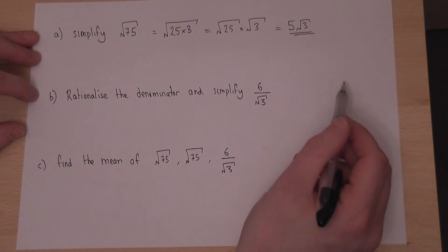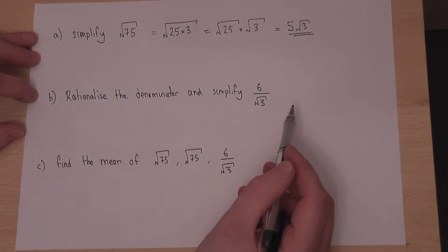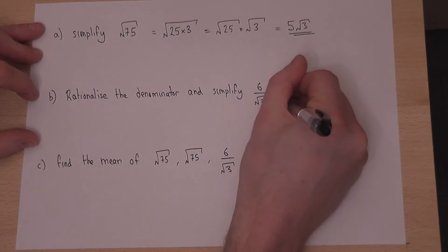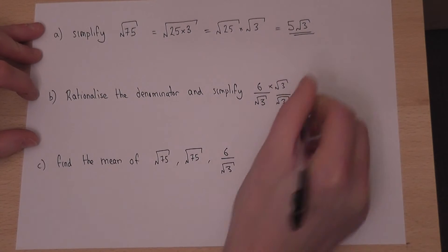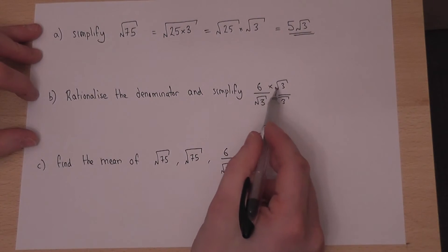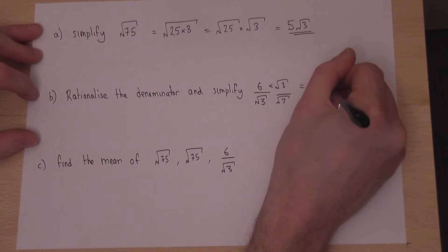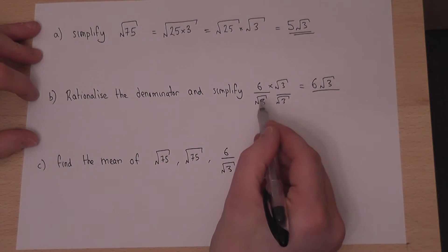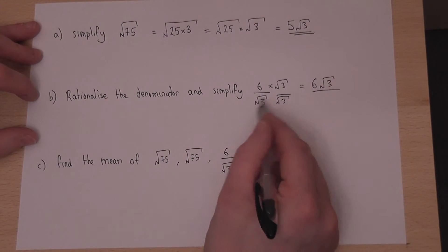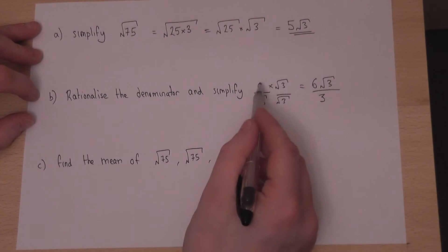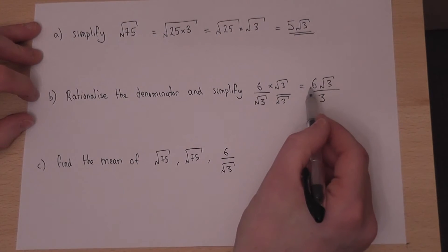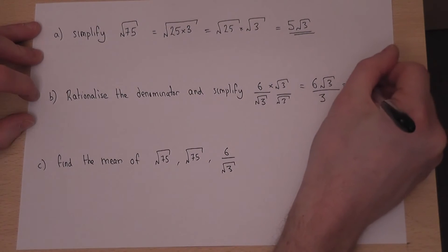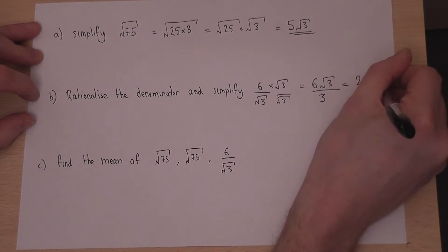The second part asks to rationalize the denominator. We multiply the top and bottom by root 3. The top becomes 6 root 3, and the bottom becomes root 3 times root 3, which is root 9, which is 3. So 6 over root 3 equals 6 root 3 over 3. There are two 3s in 6, so this simplifies to 2 root 3.